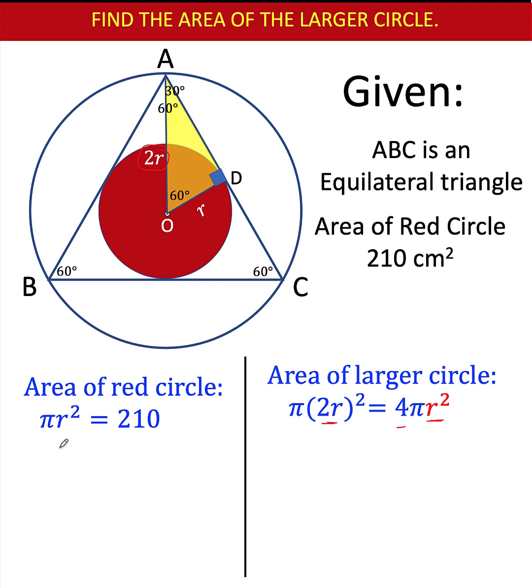But from the first equation here, we can solve for r² by dividing both sides by π to get r² = 210/π. And this r² now can be substituted to whatever is the variable here, which is also r². We can replace that with the value 210/π.